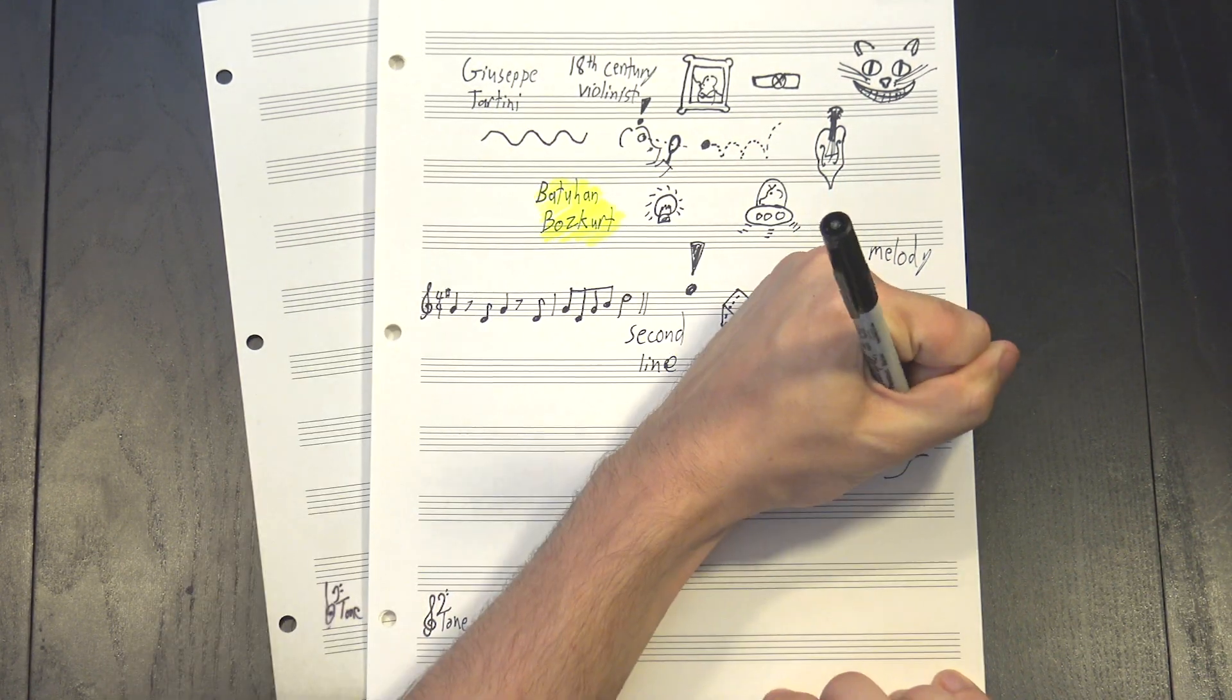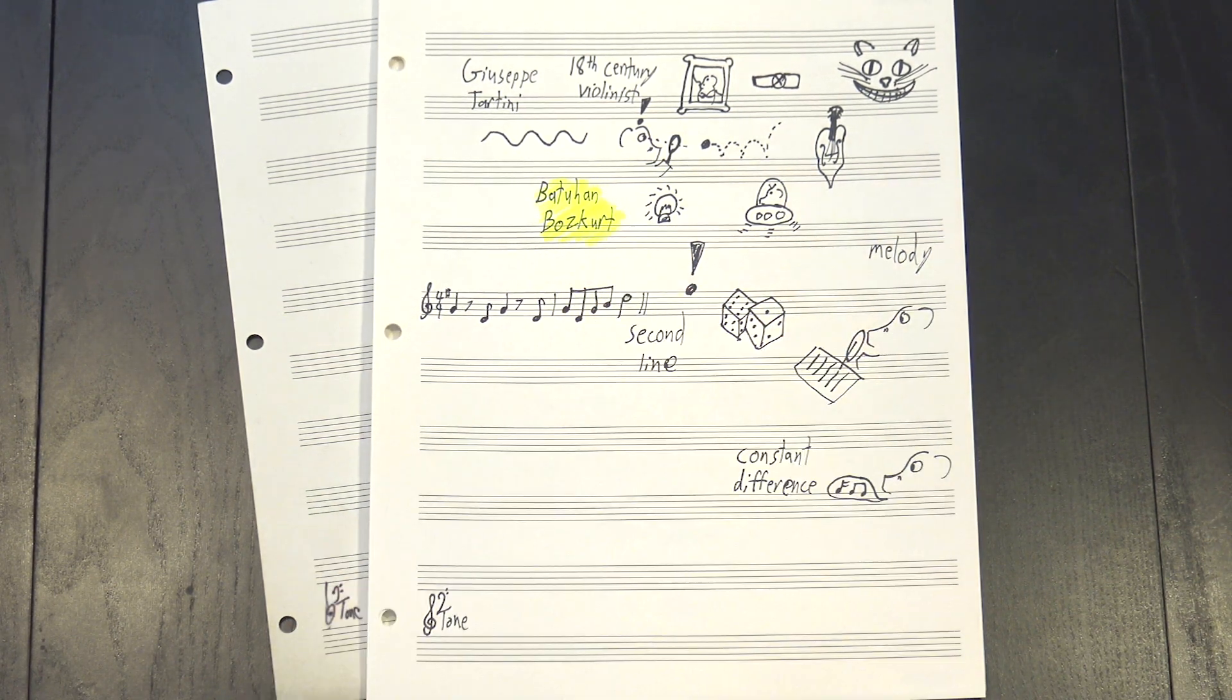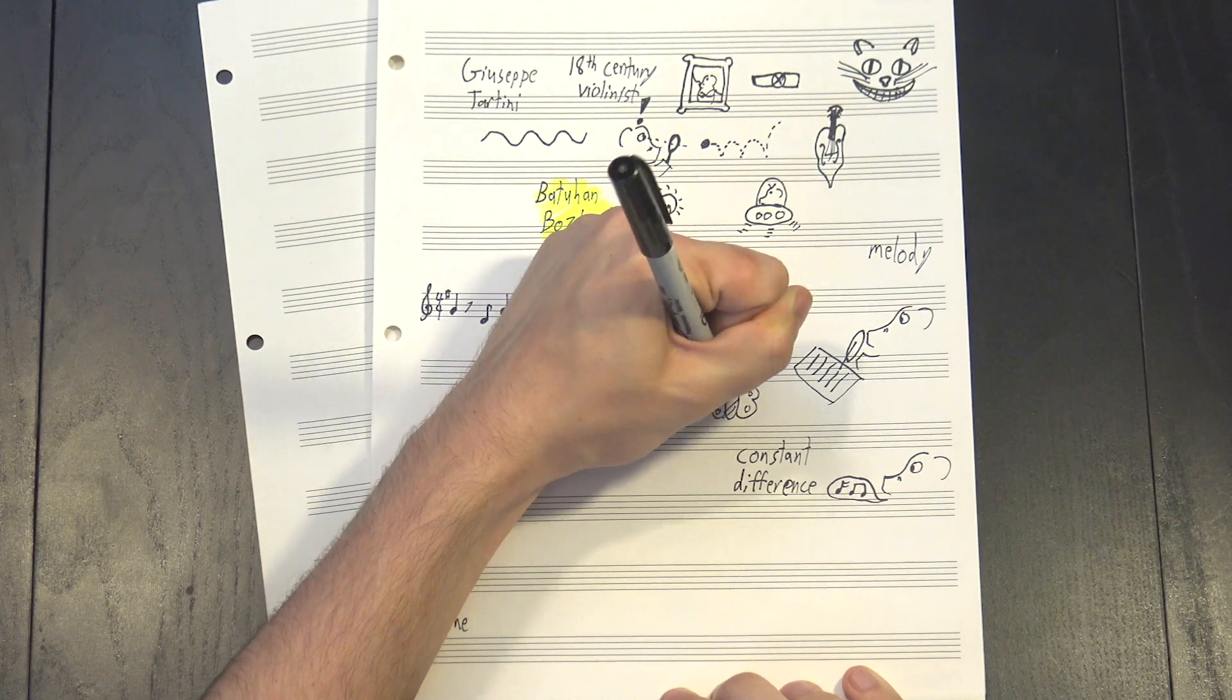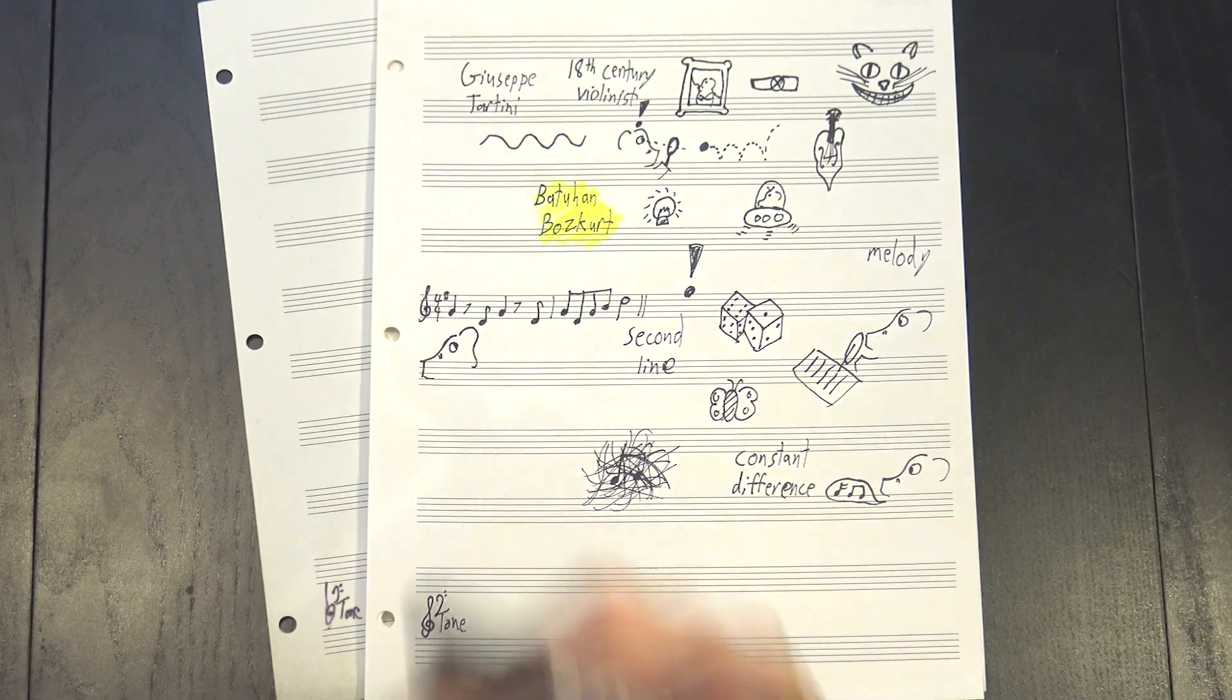Then I randomly generated some white noise, but with a twist. I played a second line on top, with a difference equal to the frequency of the melodic note. This creates a constant difference tone, even though the actual played notes keep changing, letting me bury a melody inside a bunch of static. With all that in mind, listen to it again.